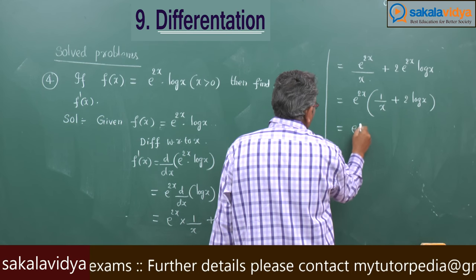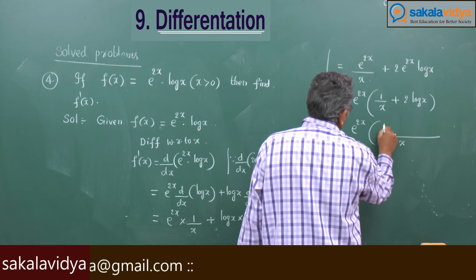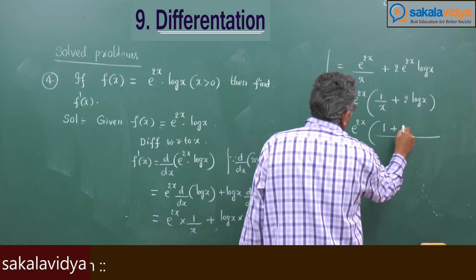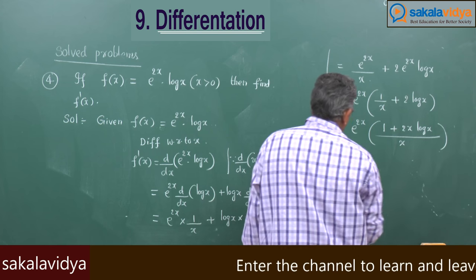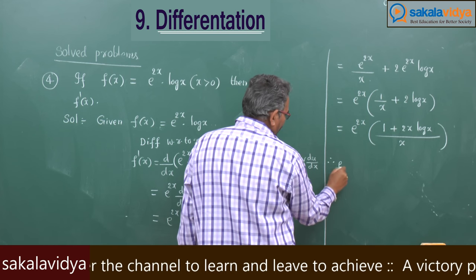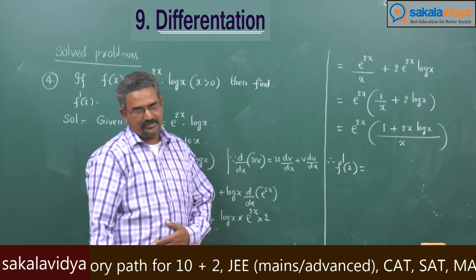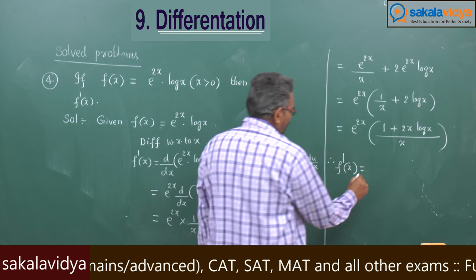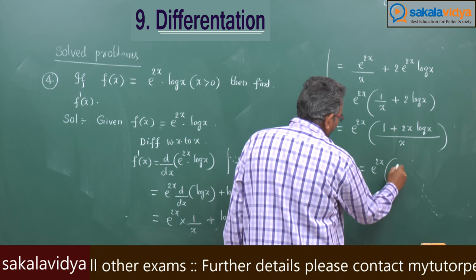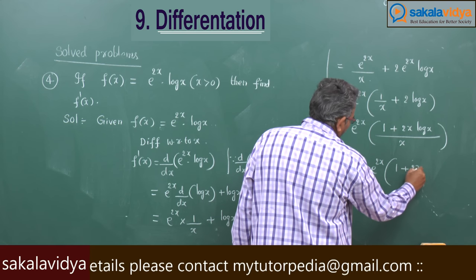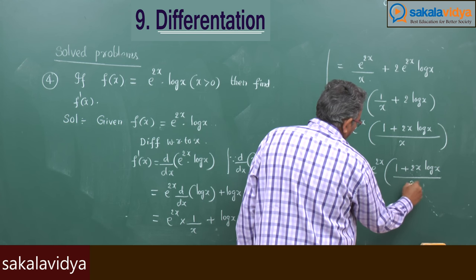Taking e power 2x as common factor, we have e power 2x into 1 by x plus 2 log x. Taking x as the LCM, this becomes e power 2x into 1 plus 2x log x. Therefore, the required value f dash x equals e power 2x into 1 plus 2x log x, all divided by x.